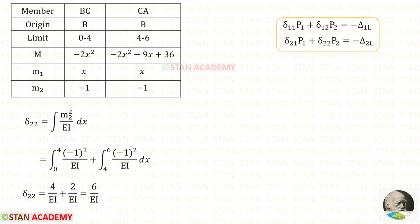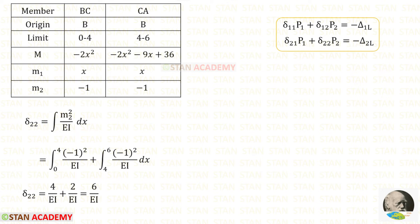Now let us find delta 22. The formula is the integration of M2 squared divided by EI dx. After applying the values of M2 and performing the integration, for delta 22 we get 6 divided by EI.